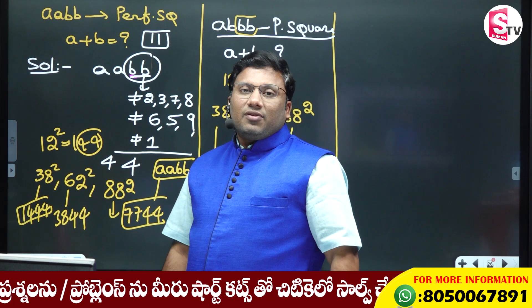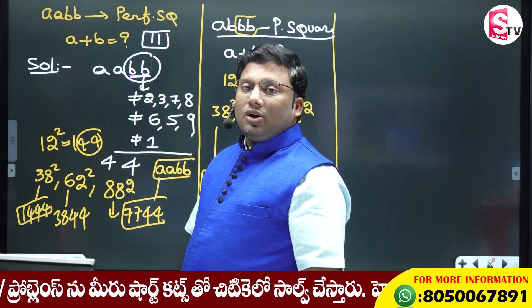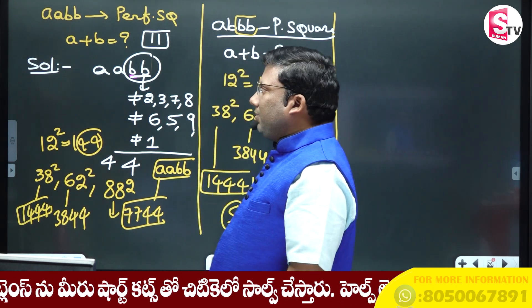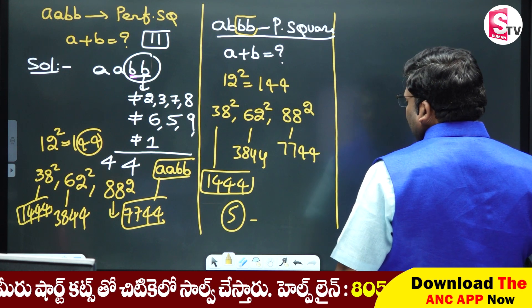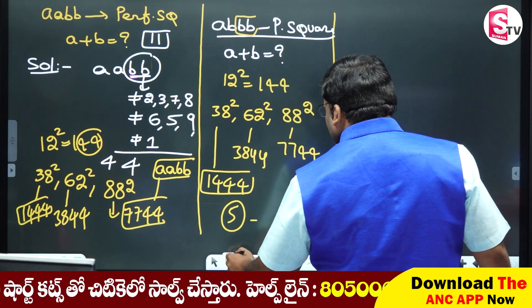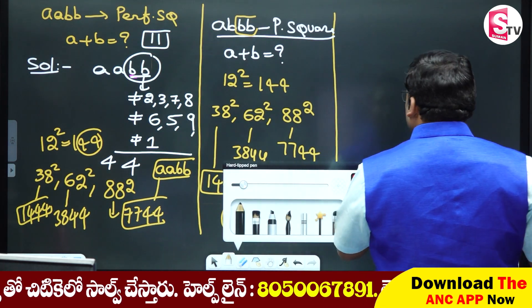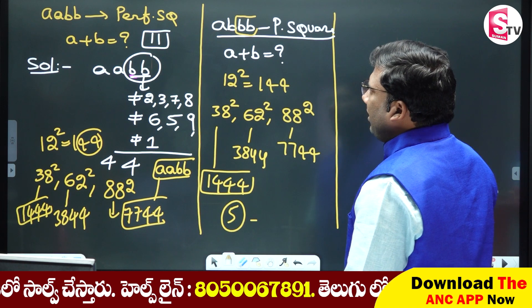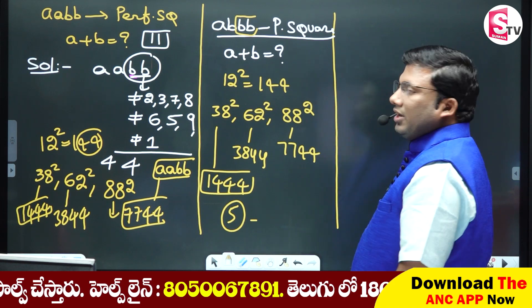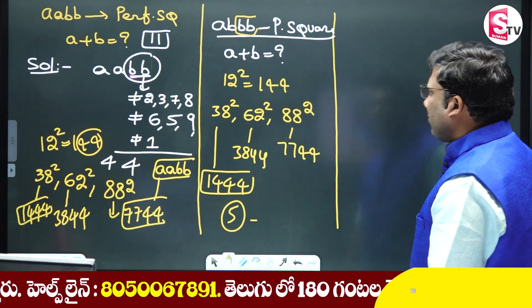This is a level 3 problem related to ordinary squares. AABB perfect square, ABBB perfect square — let's see how many such numbers exist.